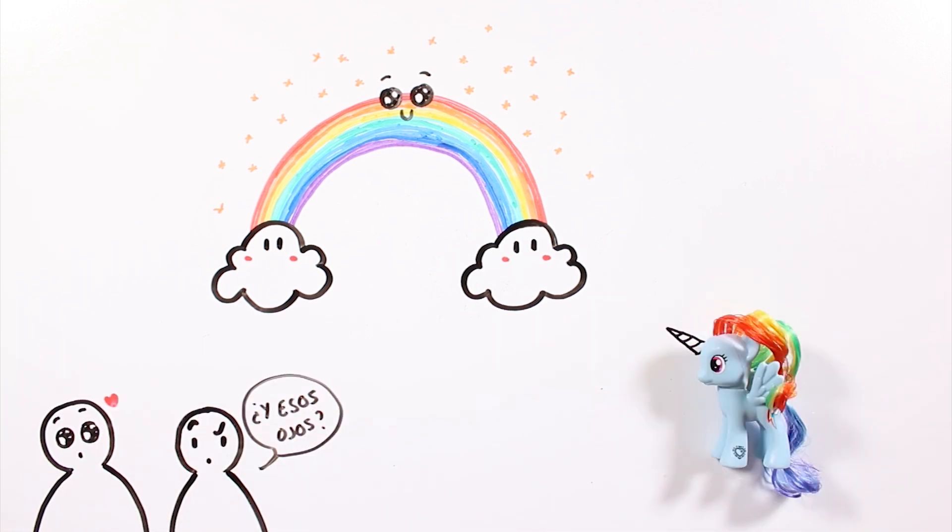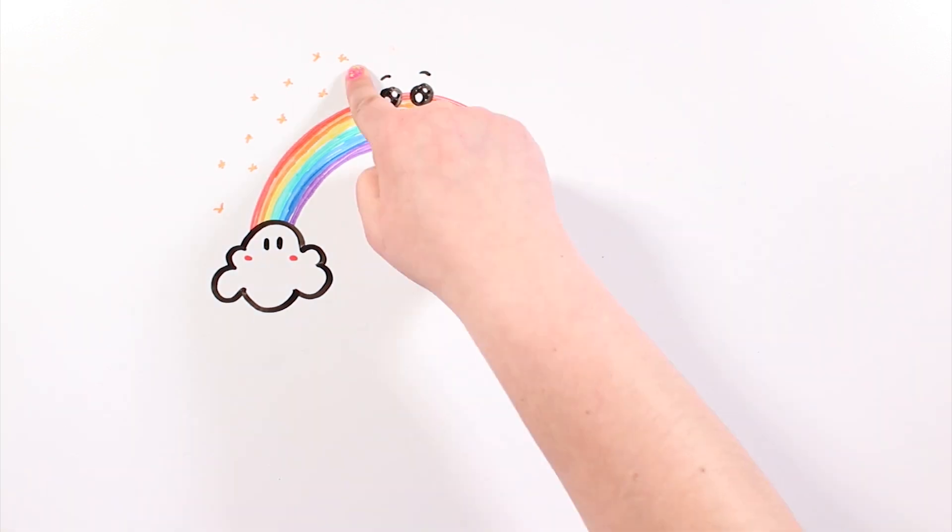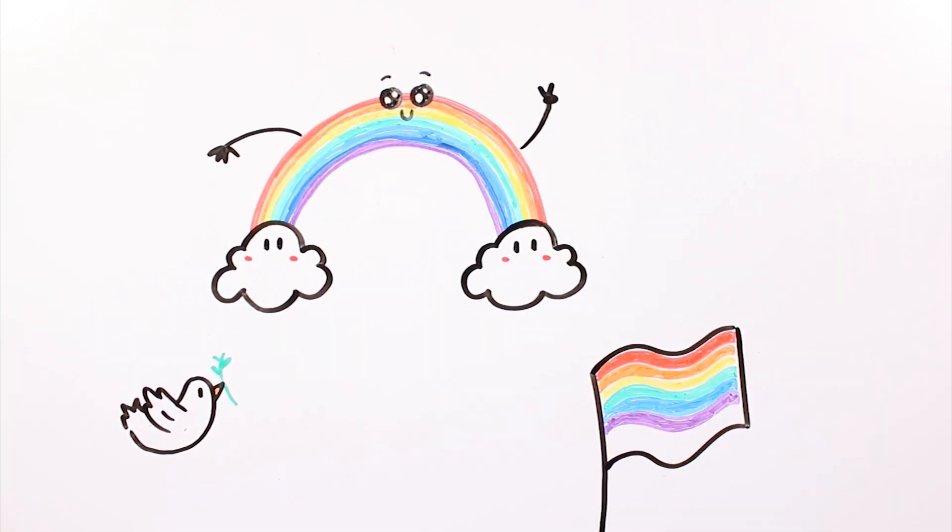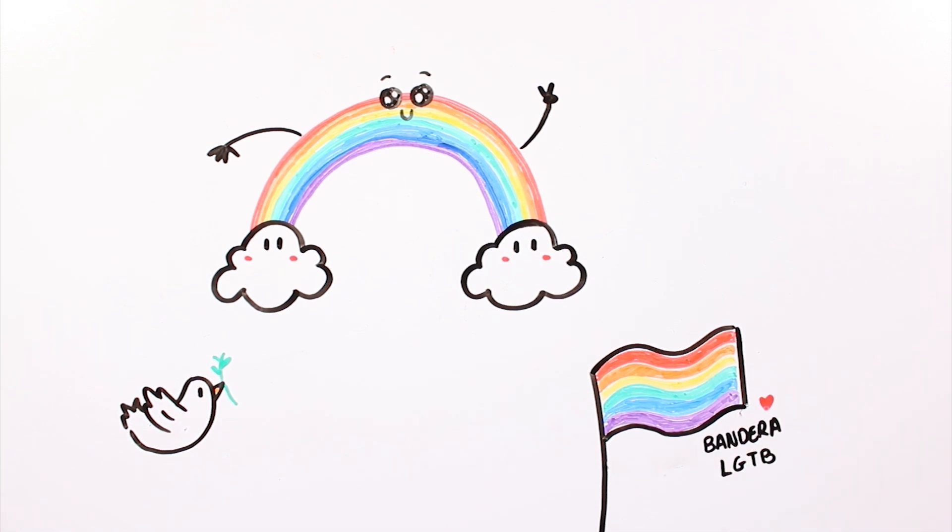Rainbows and unicorns are, we could say, like first cousins. Rainbows are a universal symbol of activism and pacifism.